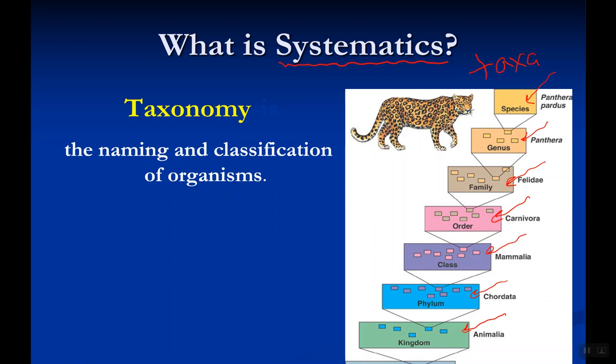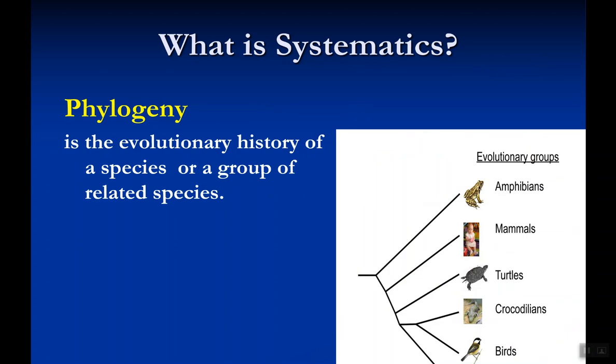There is actually a taxon bigger than kingdom, which is the domain, so I modify the mnemonic to 'Dumb kings play chess on fat girls' stomachs.' We also need to know what phylogeny is — all you have to know is that phylogeny denotes the evolutionary relationship or evolutionary history between organisms. Think of phylogeny as the tree of life.